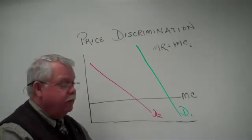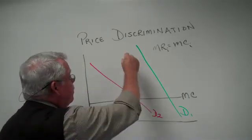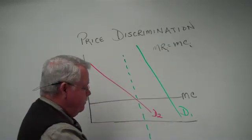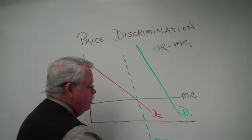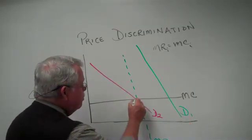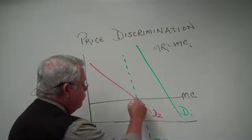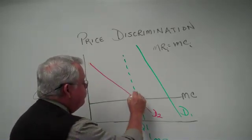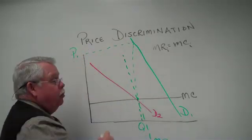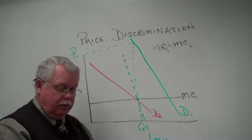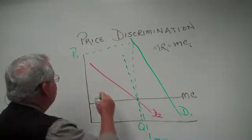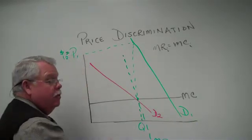Where is the marginal revenue curve for demand curve number one? Let's say it comes down somewhere like that — here's our marginal revenue curve for market number one. Where does marginal revenue equal marginal cost? Right here. That tells us the right quantity we want to sell, and reading up to the demand curve and over tells us the price we want to charge in that first market. For the evening moviegoers with a slightly more inelastic demand and maybe more of them, let's say we're going to charge $10 for a movie ticket.